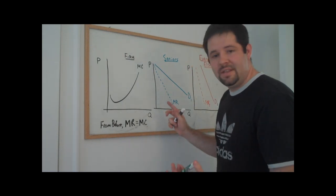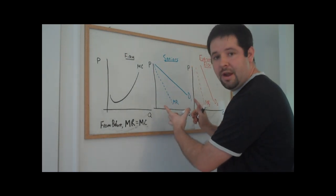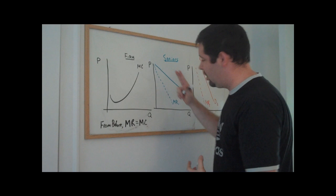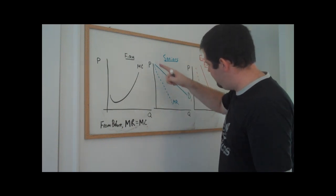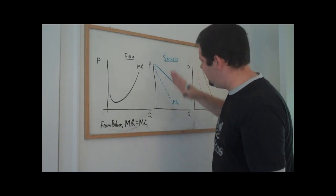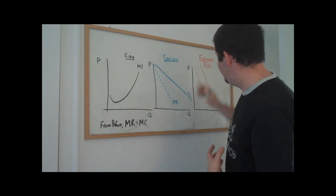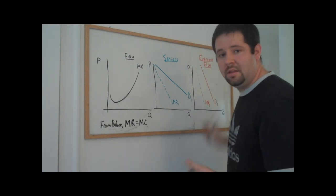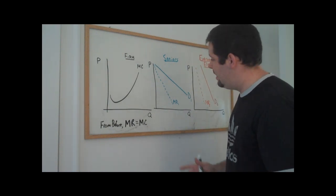What we'll notice is that if we look at the seniors graph and we look at the marginal revenue curve, it's just going to be half the demand curve, just as usual, and the same thing in the market for everyone else.